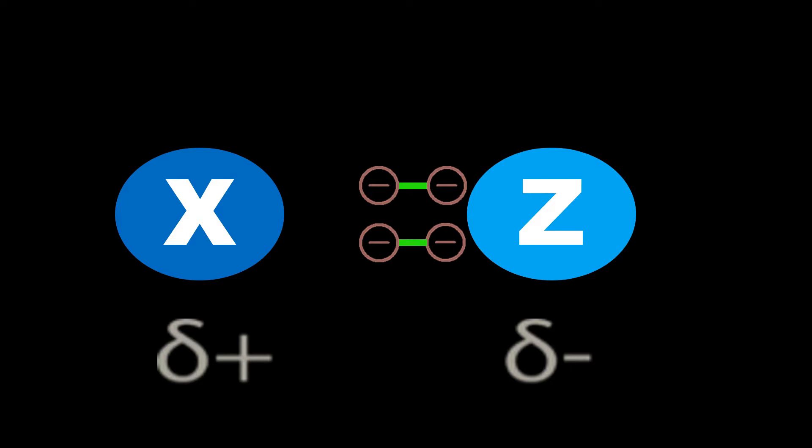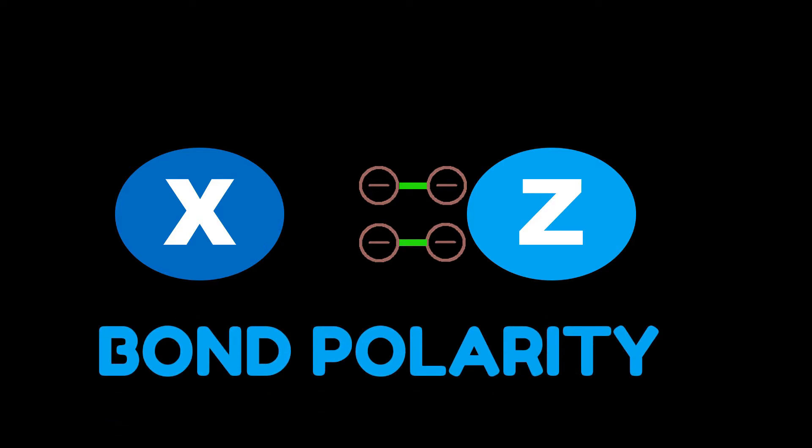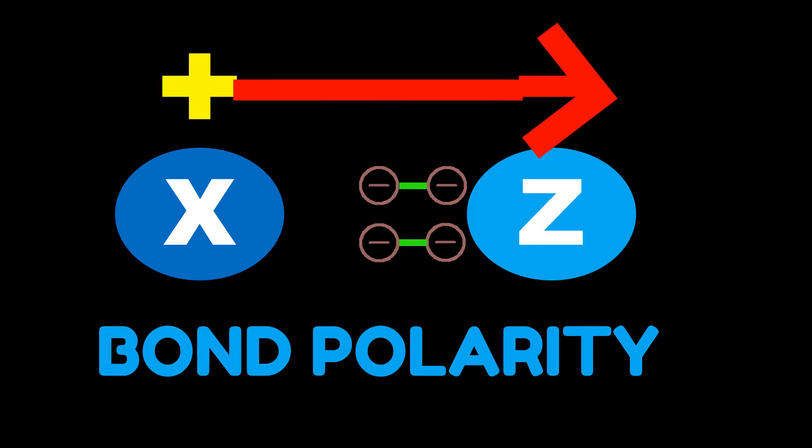This gaining a charge is what we call bond polarity. Polarity indicates only two things, like the northern south pole, the positive and negative pole, and for atoms, polarity means gaining a charge. We represent bond polarity with an arrow. The arrowhead represents the more electronegative atom.